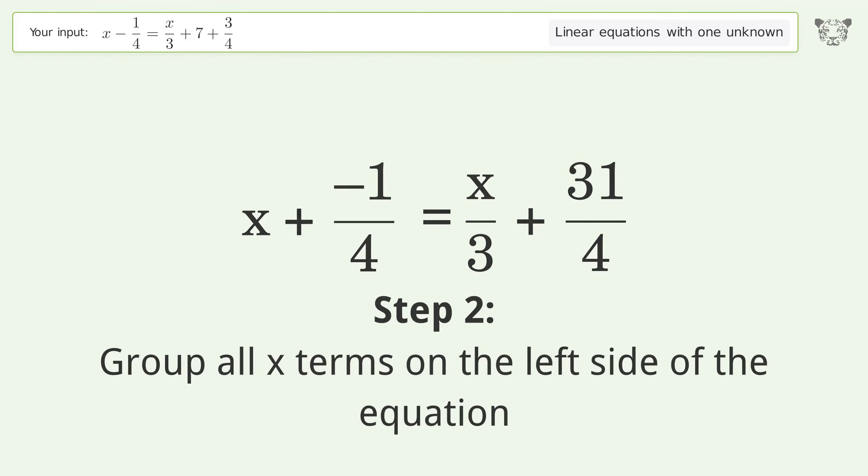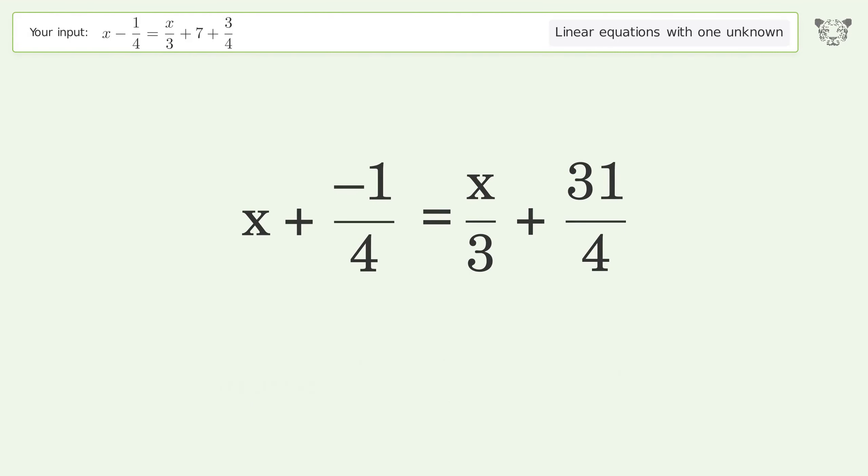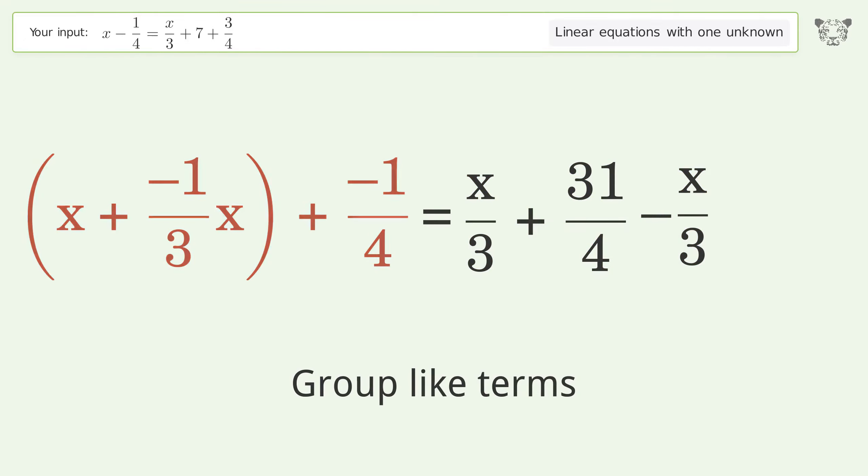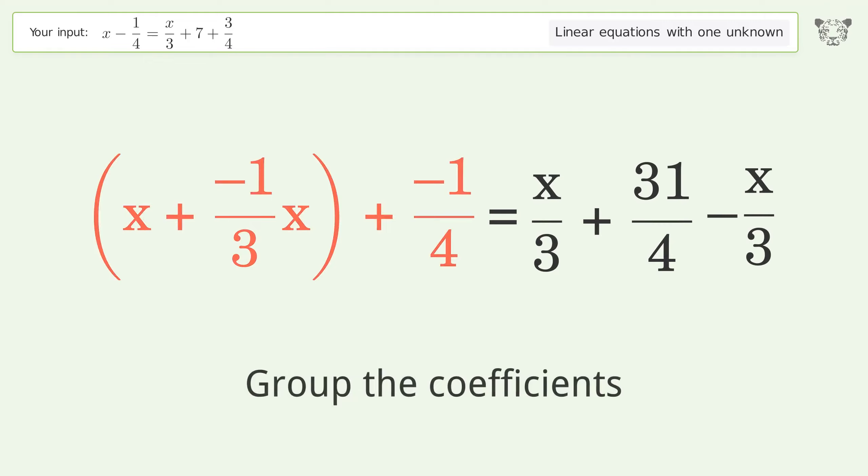Group all x terms on the left side of the equation. Subtract 10 over 3 from both sides. Group like terms. Group the coefficients.